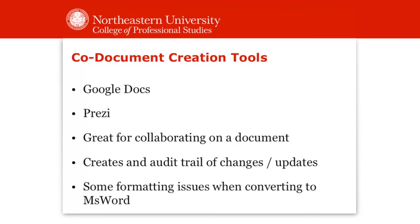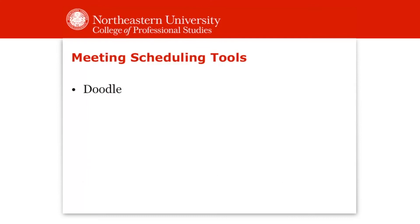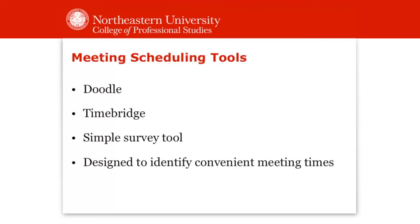Google Docs specifically creates an audit trail of changes and updates, so you know what changes were made and when, and you can view different versions of the document. One caution: there are formatting issues when converting to MS Word or other formats, so be aware or you may be surprised by what your document looks like. I find it's often best to export as a PDF. Meeting scheduling tools like Doodle and TimeBridge are simple survey tools that find out when people are available and identify convenient meeting times.